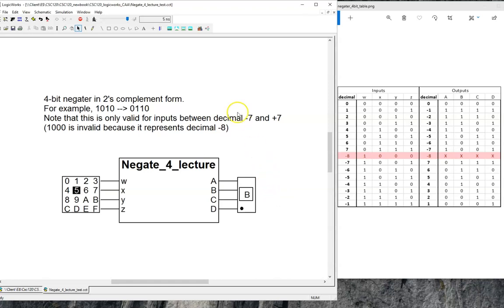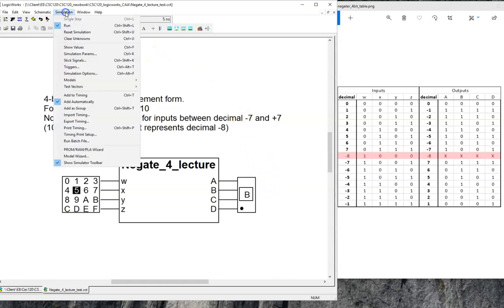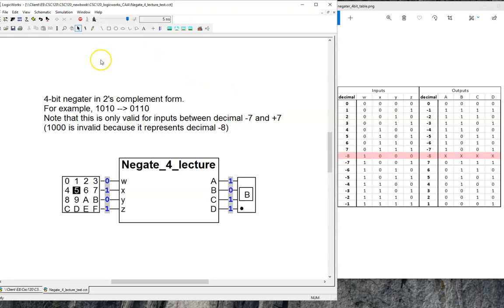To really see what is happening, I will click on simulation, show values, so we can see each of the individual binary values. The input positive 5 is now seen in binary as 0, 1, 0, 1. And the output is 1, 0, 1, 1. Is this correct? Yes, according to the truth table, and also yes if we convert the numbers by hand.